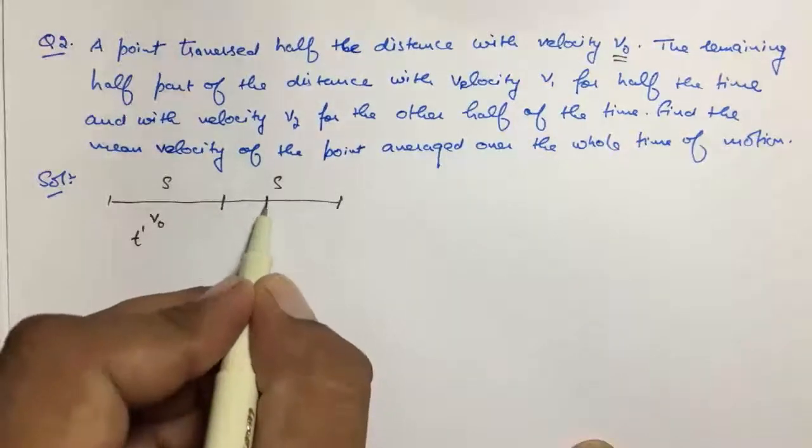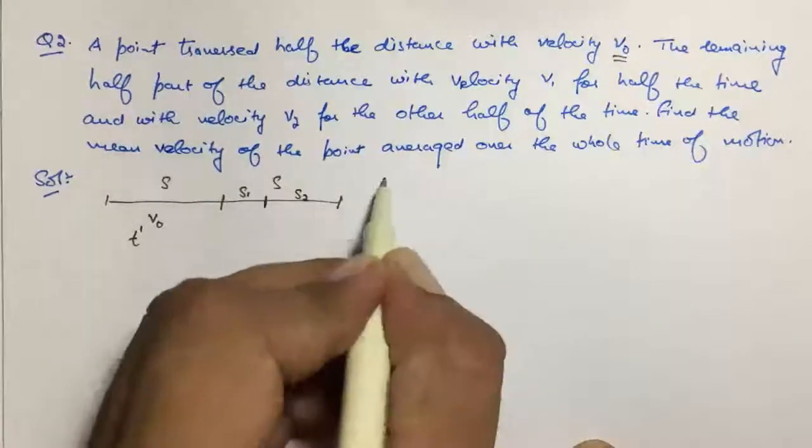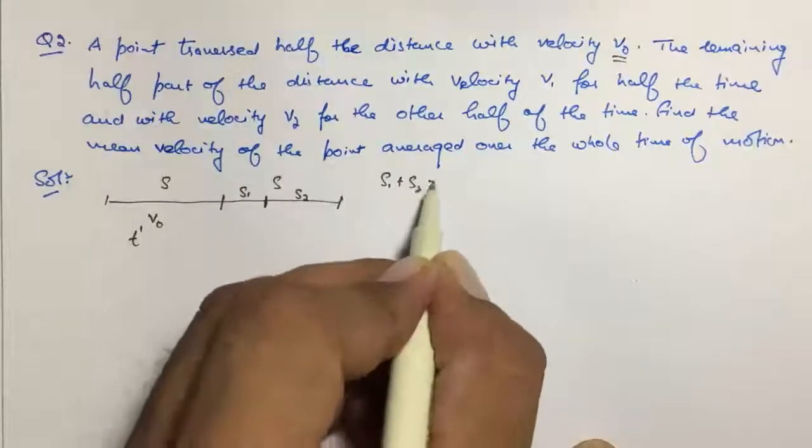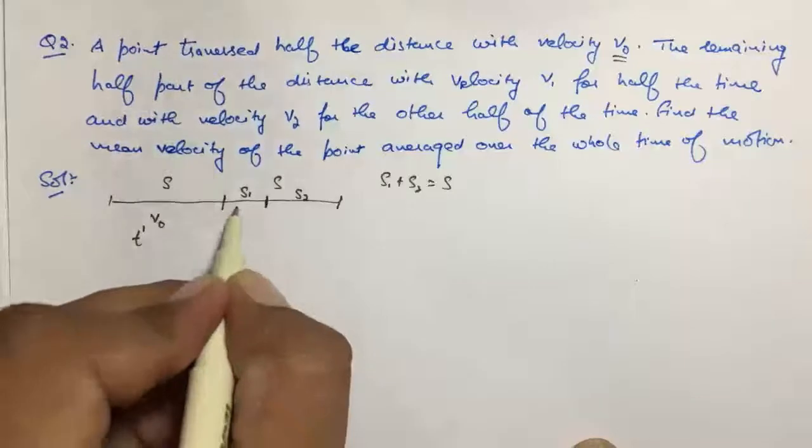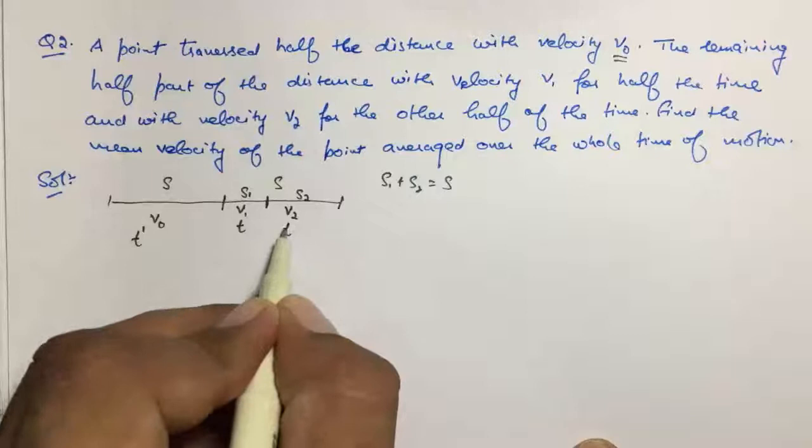Say this distance is S₁ and this distance is S₂, where S₁ plus S₂ equals S, with velocity V₁ and time T, and here we have velocity V₂ and time T. We cannot say S₁ and S₂ are equal, but S₁ plus S₂ equals S.